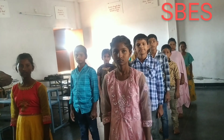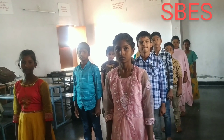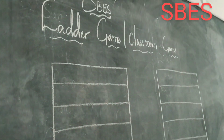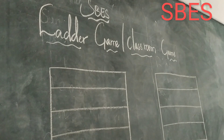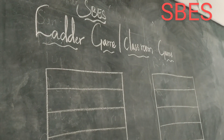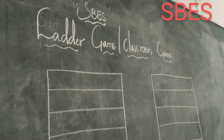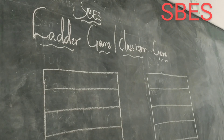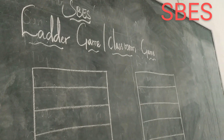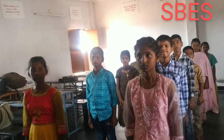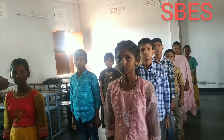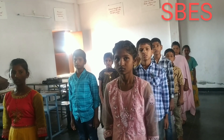I have divided you people into two groups and I have drawn two ladders on the blackboard, in which I have written two words for each group. Write a new word with the letter with which it was ended. Whoever continues the game and writes fast will be the winner, and whoever stops will be the runner.